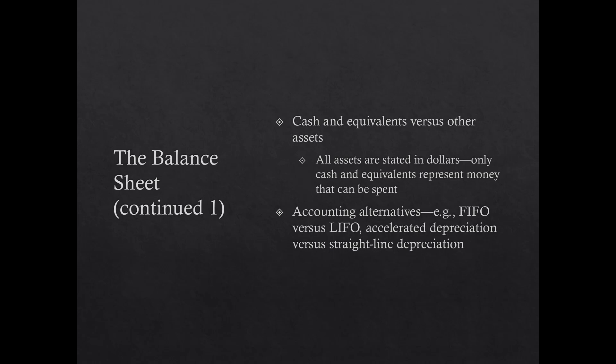The balance sheet starts with cash and cash equivalents — the most liquid assets — and moves down through the asset list. In the U.S., all assets are stated in dollars. When doing financial analysis, you need to consider accounting methodologies used to value things like inventory — FIFO versus LIFO — and how quickly the business is depreciating assets or amortizing intangibles, such as accelerated depreciation versus straight-line depreciation, as these may impact taxes.